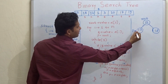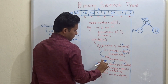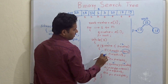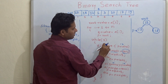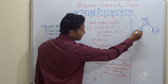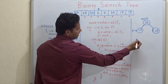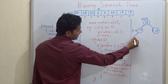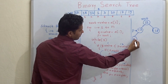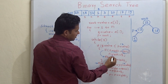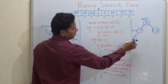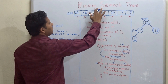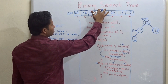Now p is pointing to the left child. The while loop executes again: is 1 less than or equal to this node? Yes. Check whether its left is null — yes, it is. So we attach 1 to the left of that node. That is how we find the correct position of 1.